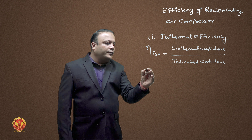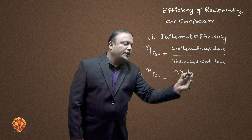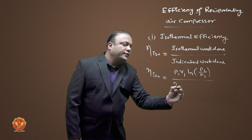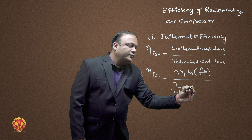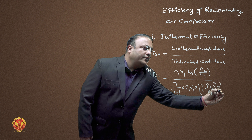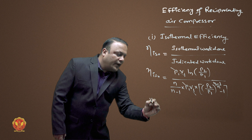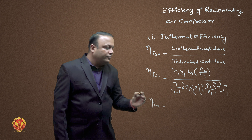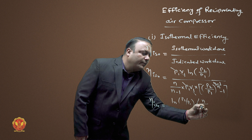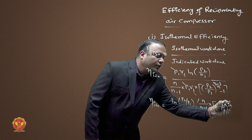This is the derivative form. The isothermal work done formula involves the term function. It is written as: upon n upon n minus 1, multiplied by bracket — the pressure ratio P2 upon P1 to the power n upon n minus 1, by n.